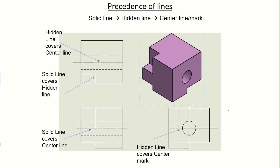Now let's look at the precedence of lines in drawings. It is very important to display lines as per the precedence: solid lines have first priority, then hidden lines, then center lines. Looking at a solid model in the front view, a corner slot that is directly visible is shown with solid lines. There is also a through hole passing through the solid model, so a center line is present, but since the slotted face is directly visible, the solid line gets preference over the center line.